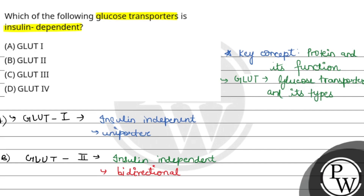Coming back to our question: which of the following glucose transporters is insulin-dependent? We can clearly see that GLUT1, GLUT2, and GLUT3 are insulin-independent, while GLUT4 is the insulin-dependent glucose transporter. Therefore, option D is the correct answer. I hope the question is clear. Best of luck.